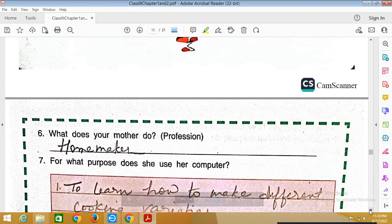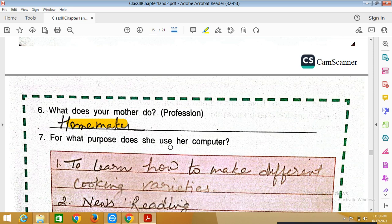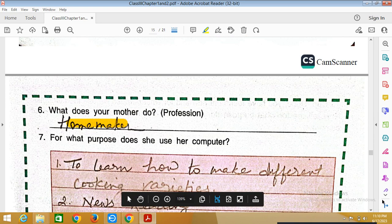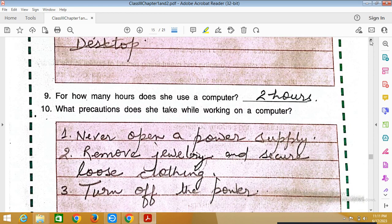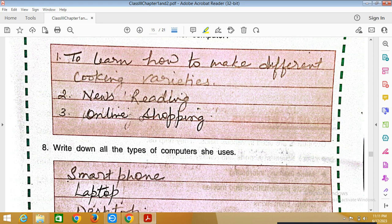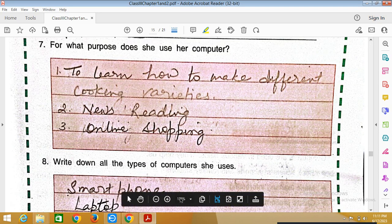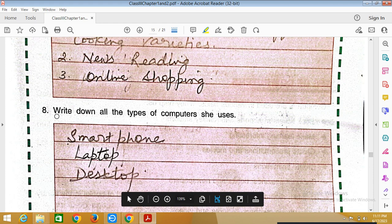What does your mother do? If your mother is a homemaker you write homemaker, if your mother is a teacher you can write teacher. For what purpose does she use her computer? To learn how to make different cooking varieties, news reading, online shopping is common. Write down all the types of computers she uses: smartphone, laptop, desktop. If your mother only is using smartphone, just write smartphone.